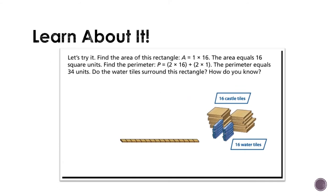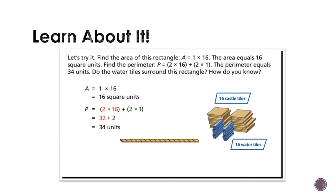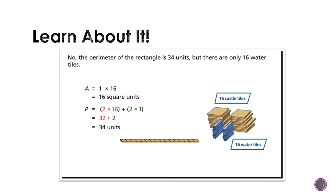Let's try it. Find the area of this rectangle: A equals 1 times 16 — the area equals 16 square units. Find the perimeter: P equals 2 times 16 plus 2 times 1 — the perimeter equals 34 units. Do the water tiles surround this rectangle? No, the perimeter of the rectangle is 34 units, but there are only 16 water tiles.